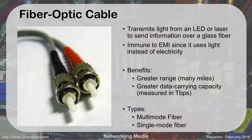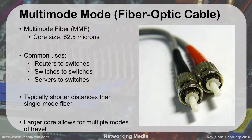Multimode fiber has a thicker inside core — 62.5 microns wide, just a little bigger than a human hair. You can use it to connect routers to switches, switches to switches, or servers to switches. Multimode gives you less distance than single mode because it allows multiple paths for the light to travel — the light can bounce inside the cable and arrive at different times — but it still delivers those high speeds.